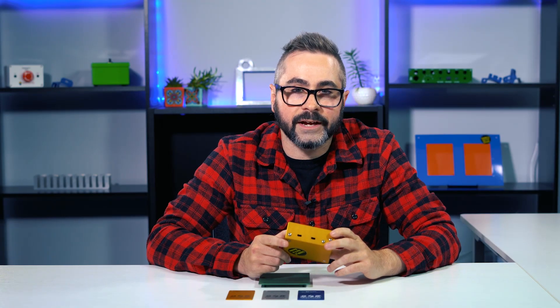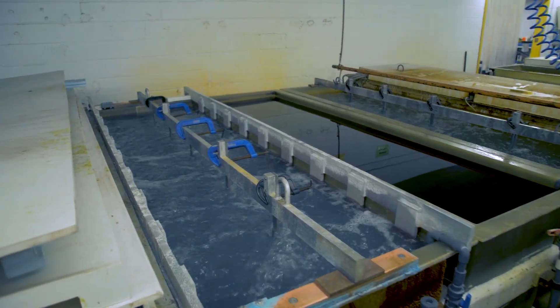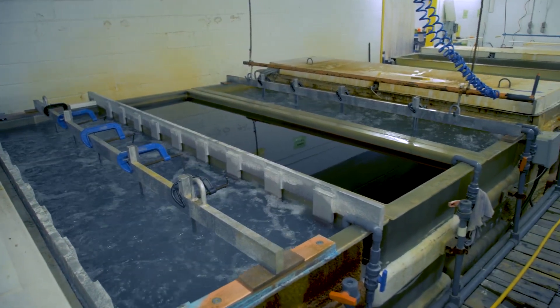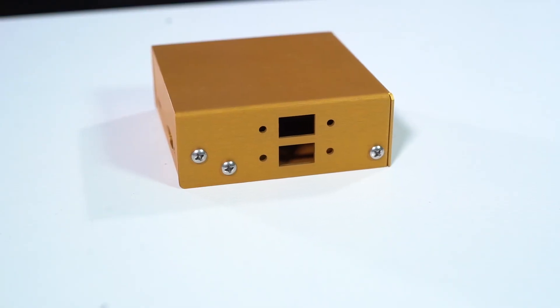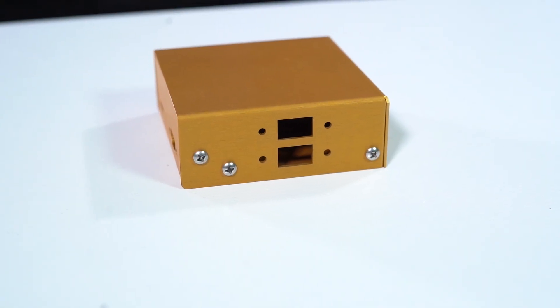Here at ProtoCase, we offer anodizing for your custom aluminum enclosures or parts. Anodizing is an electrochemical process used to make the surface of non-ferrous metals extremely hard, which makes it less likely to corrode. At ProtoCase, we offer two types of sulfuric acid anodizing, and that is Type 2 and Type 3.